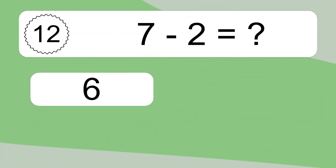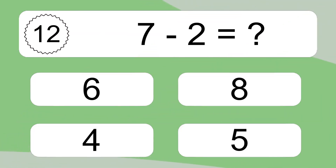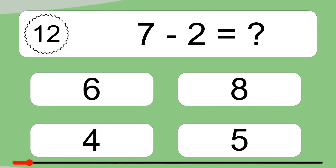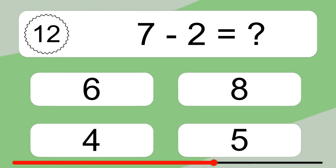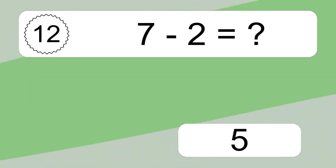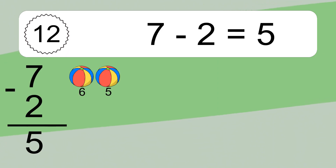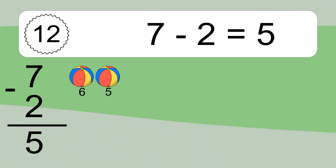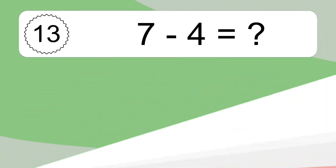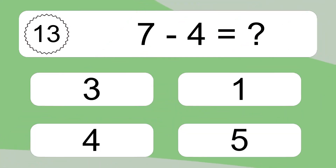7 minus 2 equals what? 7 minus 2 equals 5. Let's count it: 6, 5.